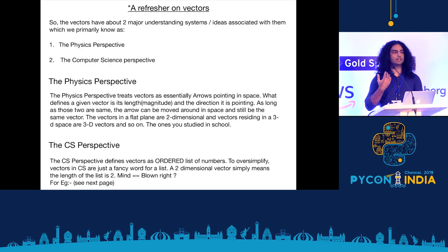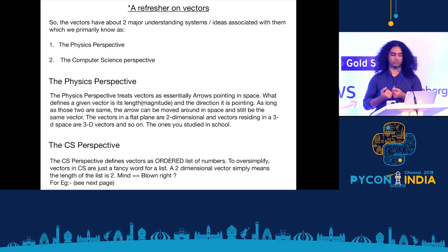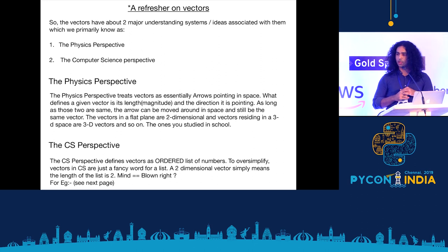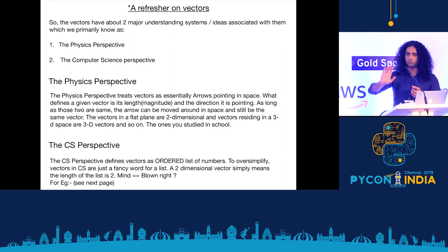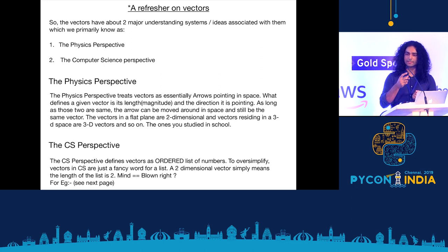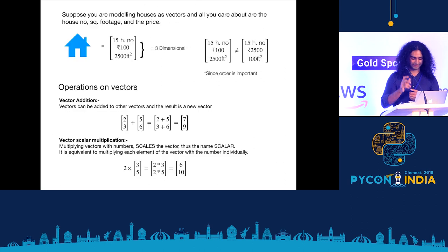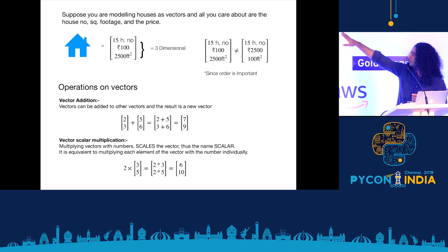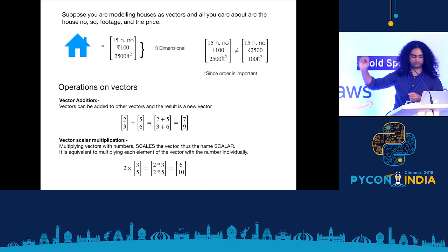We'll be talking about vectors a lot. There are two major systems for understanding vectors. The physics perspective defines vectors as arrows in space with magnitude and direction — as long as those two are the same, you can move the arrow anywhere and it's still the same vector. The CS perspective defines vectors as ordered lists of numbers. In CS, vectors are just a fancy name for an ordered list of numbers. What makes a vector 2D is that the length of the list is 2. You can add two vectors and multiply a vector by a scalar, which scales the vector — that's why it's called a scalar.